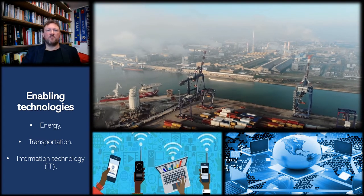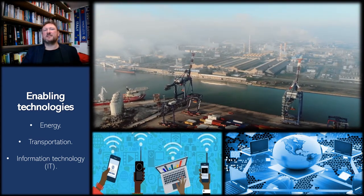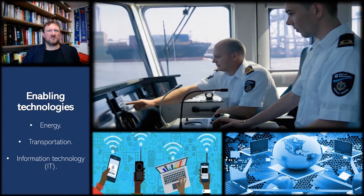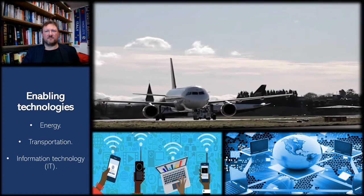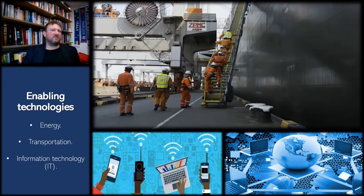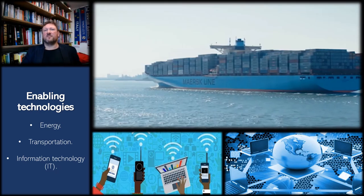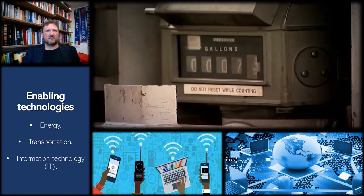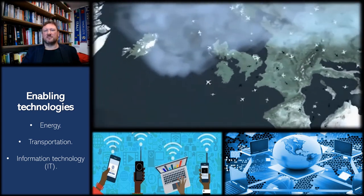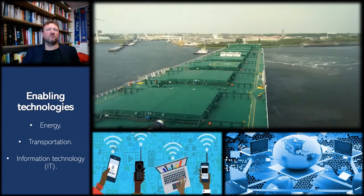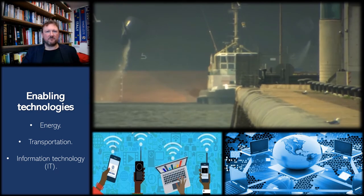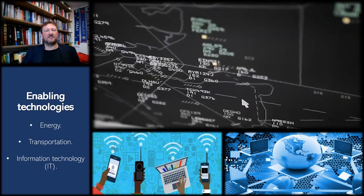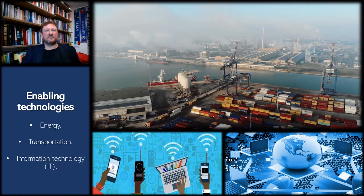Globalisation as a system of networked processes has been facilitated by three important sets of technologies. First, there's been the availability of cheap fossil fuel energy, which has enabled transnational air and shipping transit, slashing transit times to a fraction of what they were prior to the second half of the 20th century. Transportation technologies and logistics networks have evolved to incredible scale — see the size of container ships as evidence of this. Finally, rapid advances in information technology since the 1970s have been pivotal in facilitating unprecedented real-time connectivity at global scale. These three technological advances have enabled a level of global complex interconnection and exchange that is truly unprecedented in the human experience.